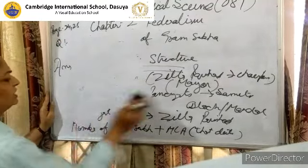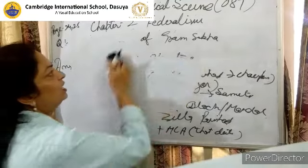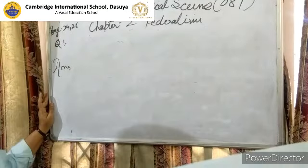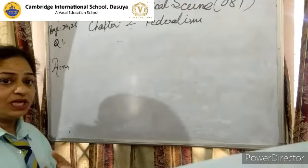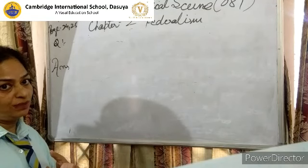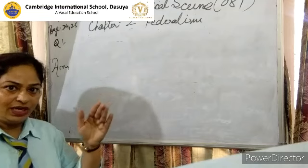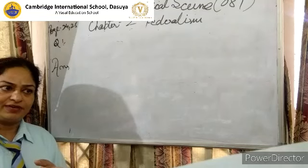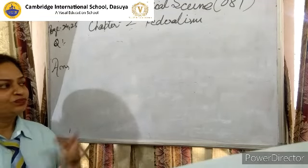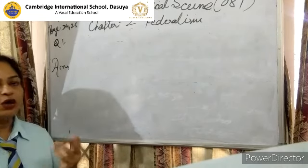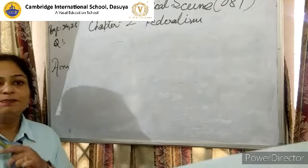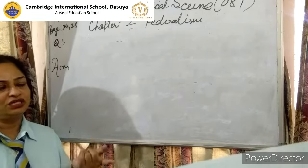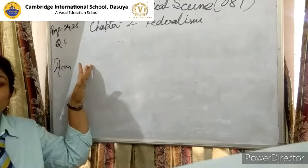Now the third question is about Municipalities. We have done Gram Sabha and Gram Panchayat for rural local government. Now let us talk about urban areas. The third question is: what are Municipalities and Municipal Corporations? Where are they found? They are found in cities — big cities like Jalandhar, Amritsar, Ludhiana.